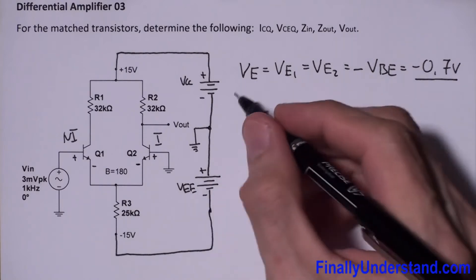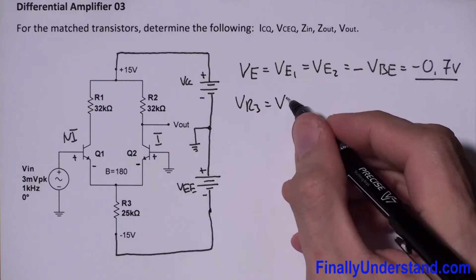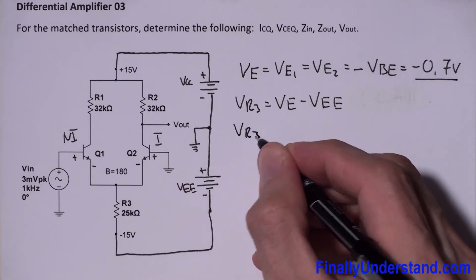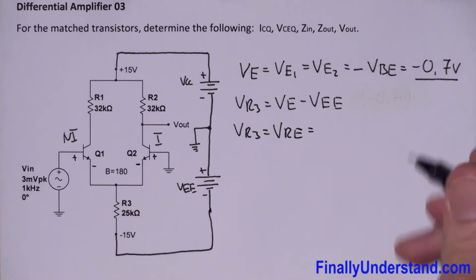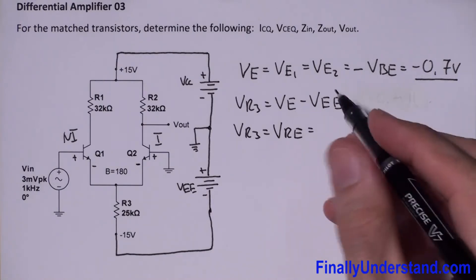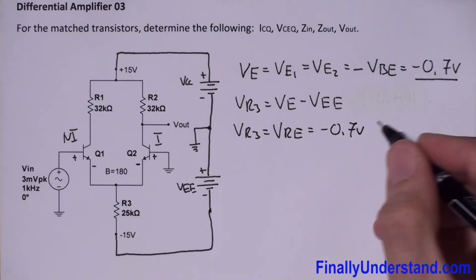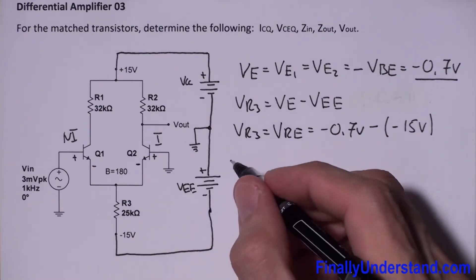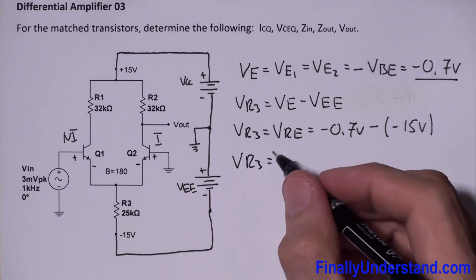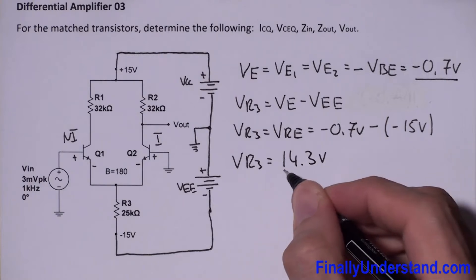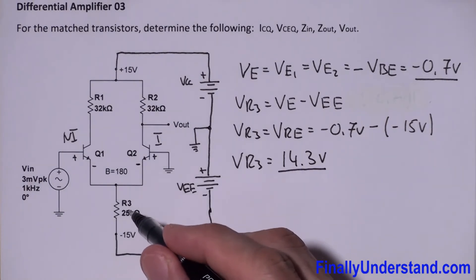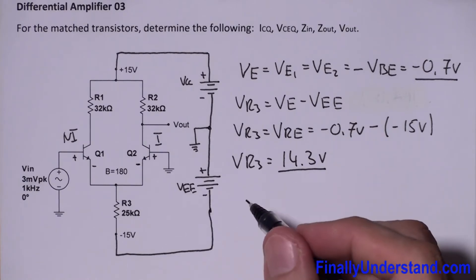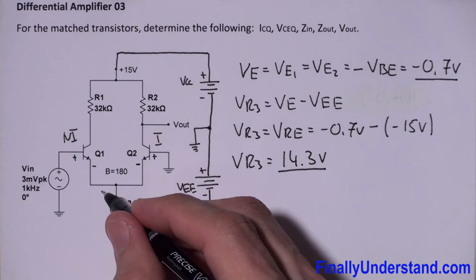So VE is equal to negative VBE, which equals negative 0.7 volts. We then find the voltage across resistor R3: VR3 equals VE minus VEE, which is negative 0.7 volts minus negative 15 volts, giving VR3 equal to 14.3 volts. In some books this is written as VRE.